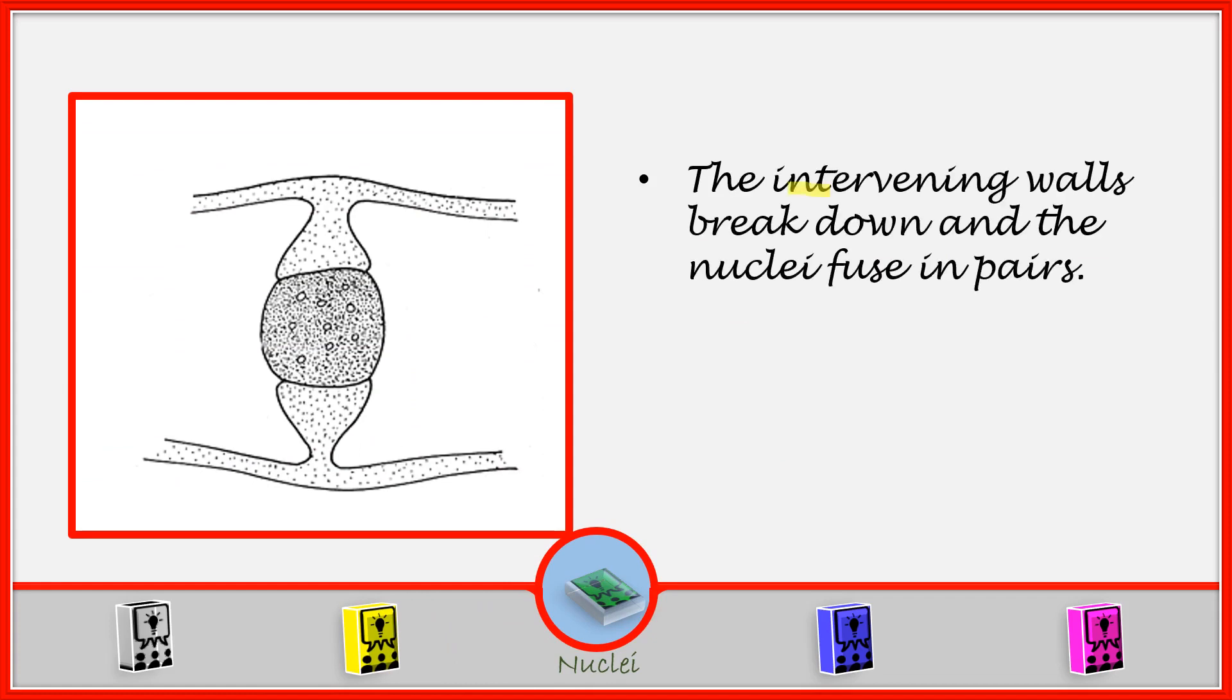The intervening walls break down and the nuclei fuse in pairs. So what is happening here is that now the wall which we had in the middle here has now broken. And when it breaks, now the nuclei will start to fuse in pairs.